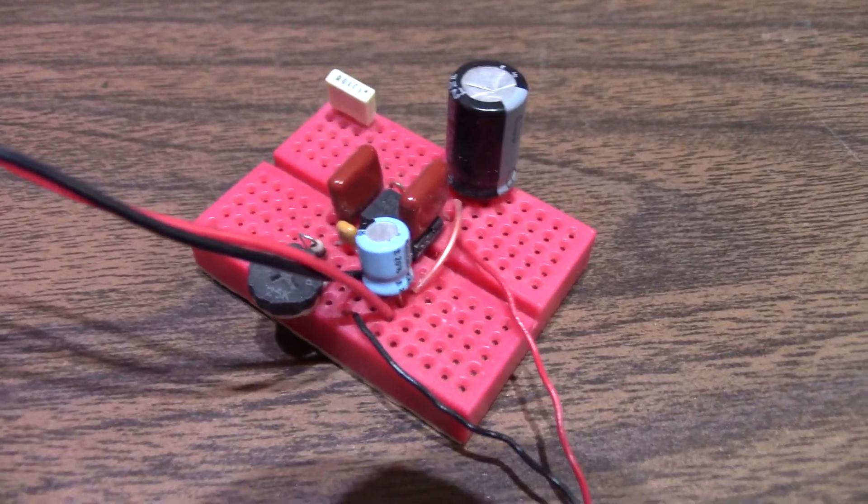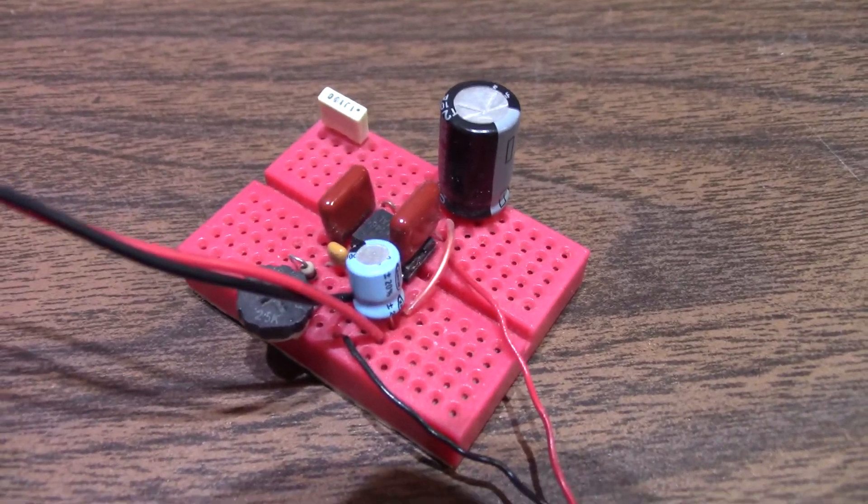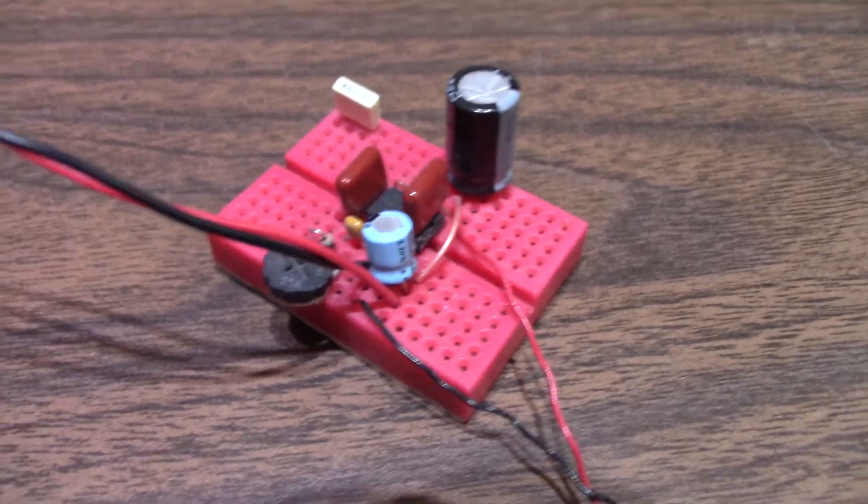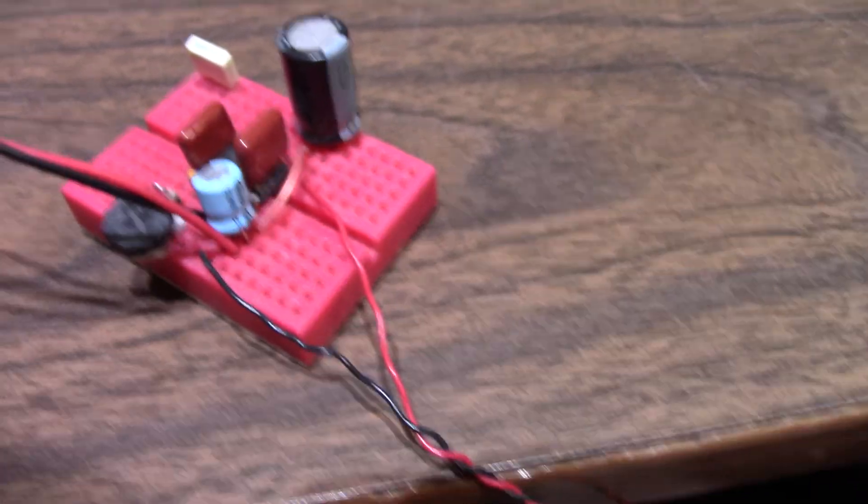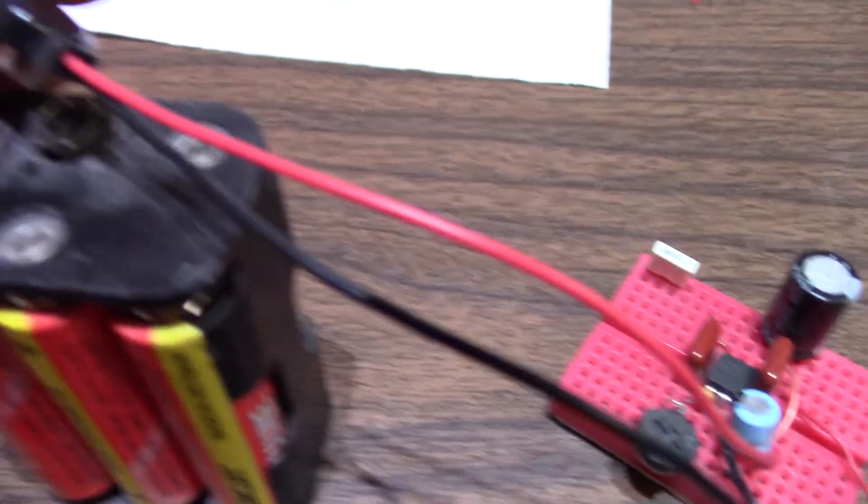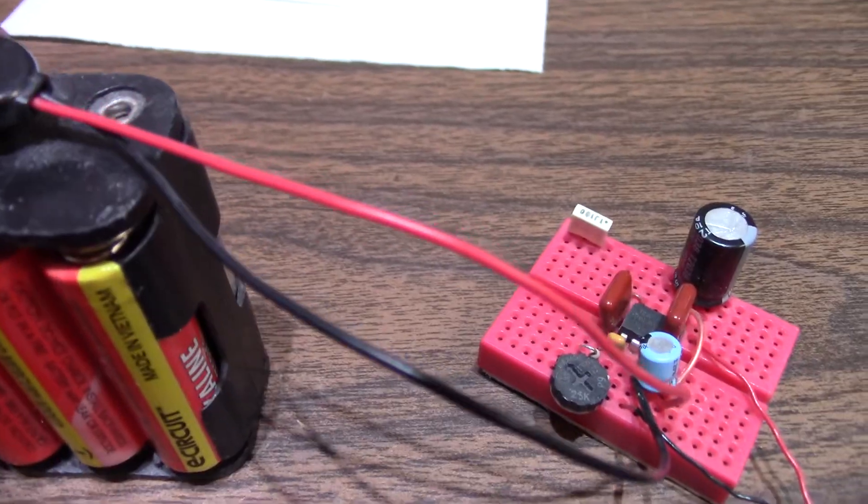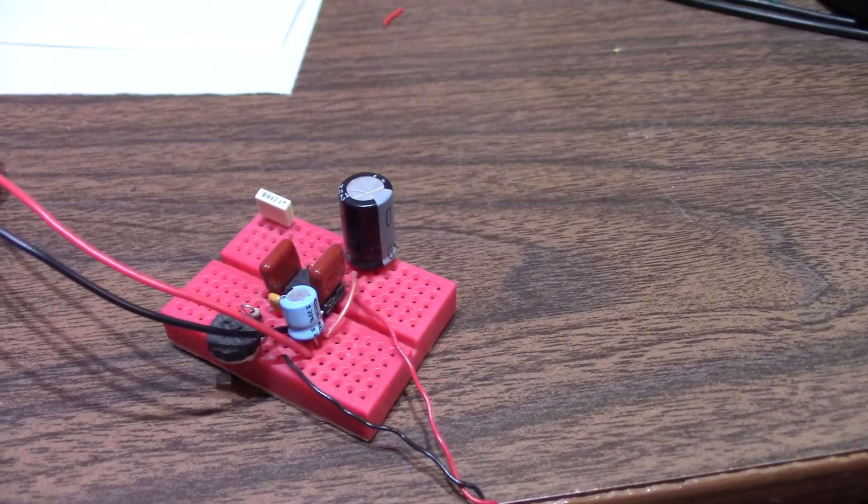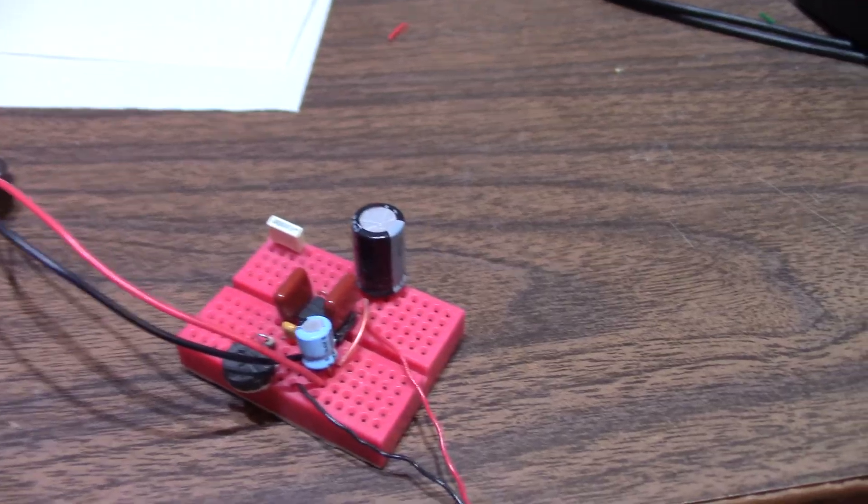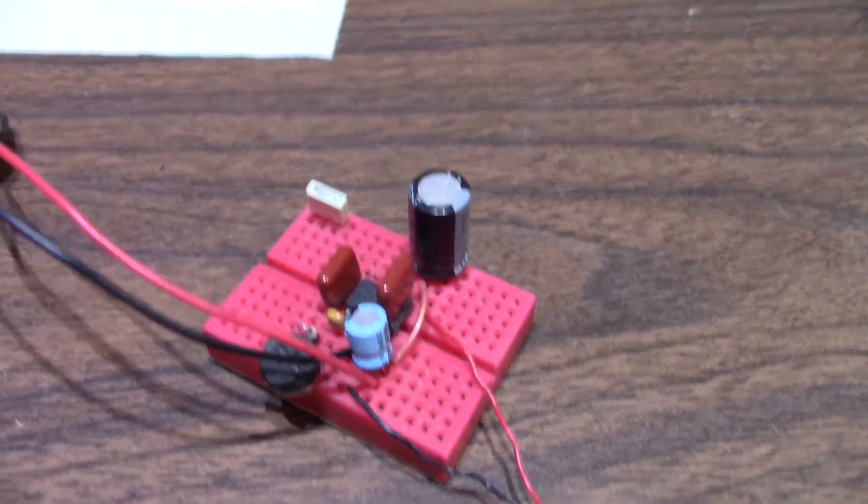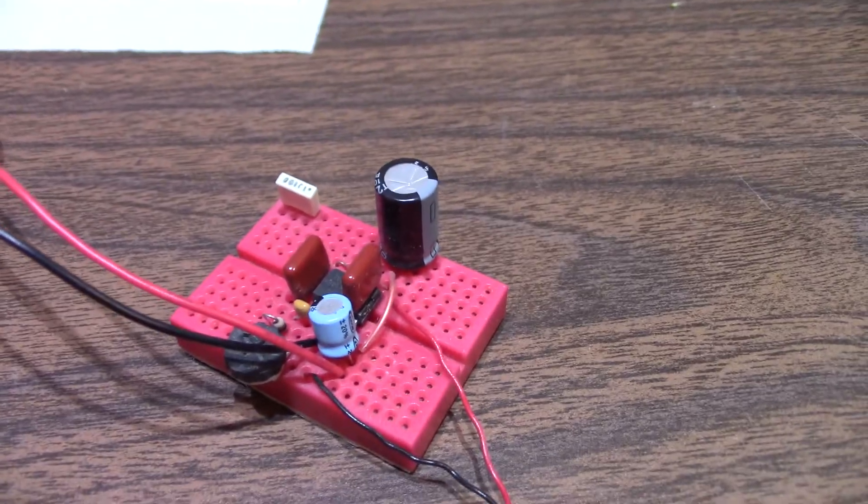So I have this little breadboarded TDA7267 chip amp. And if I hook up power to it, if you listen carefully, you can hear it makes a click when I power it up and kind of a thump when I power it down. It's not really loud. There's not much you can do about it because it's just the way the circuit's designed.